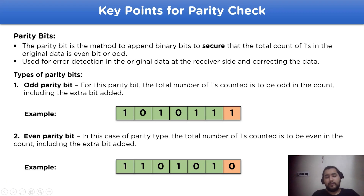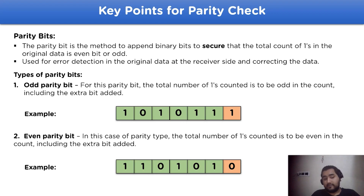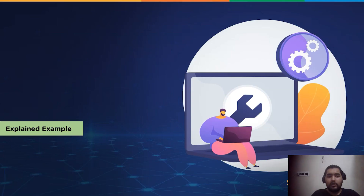The point to be noted is that the parity bit value should always be correct because it acts as the error detection method at the receiver side. Now let's move on to the explained example to consolidate all the things we have learned so far.